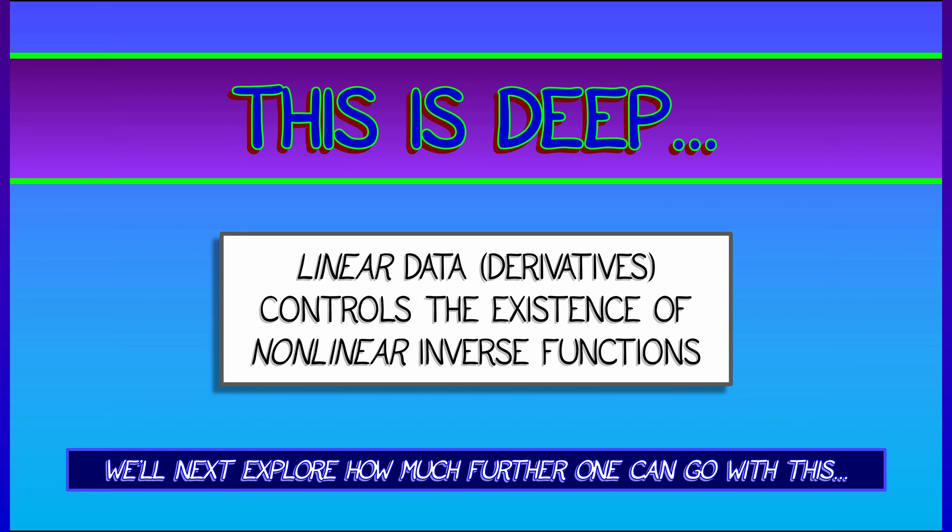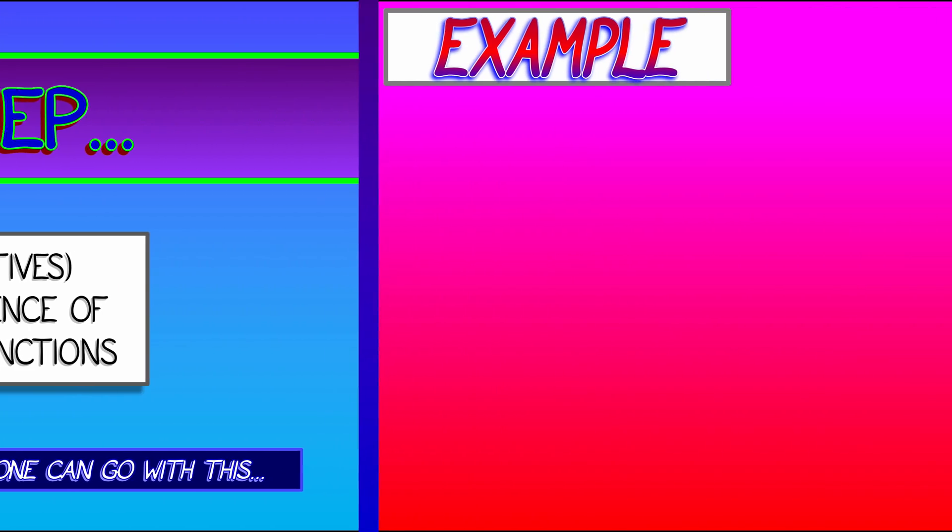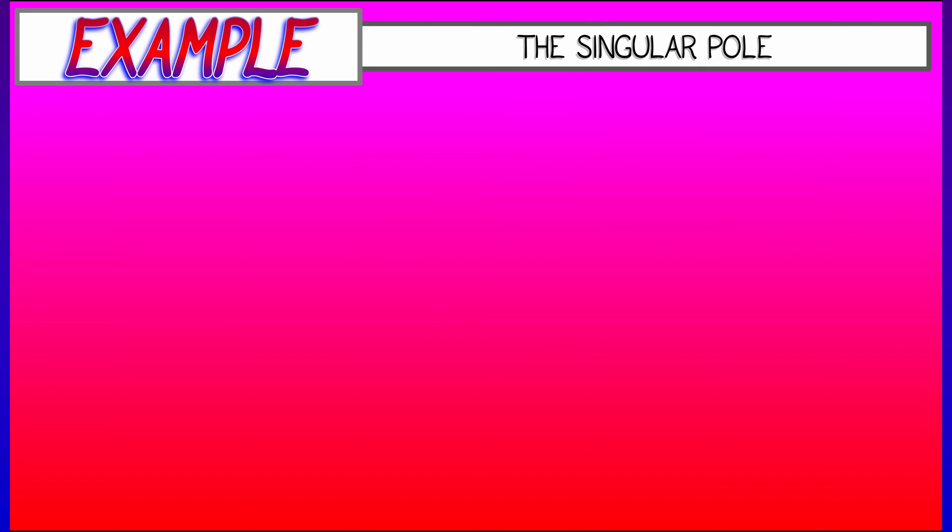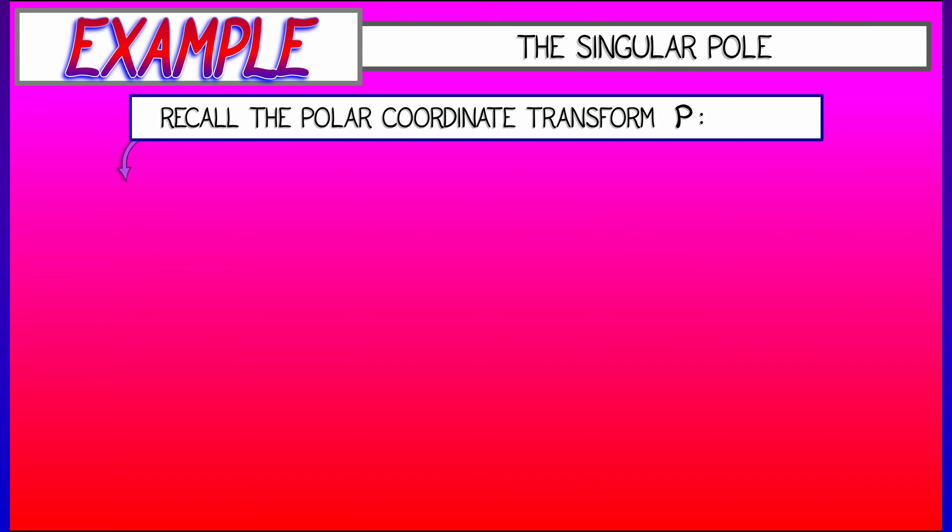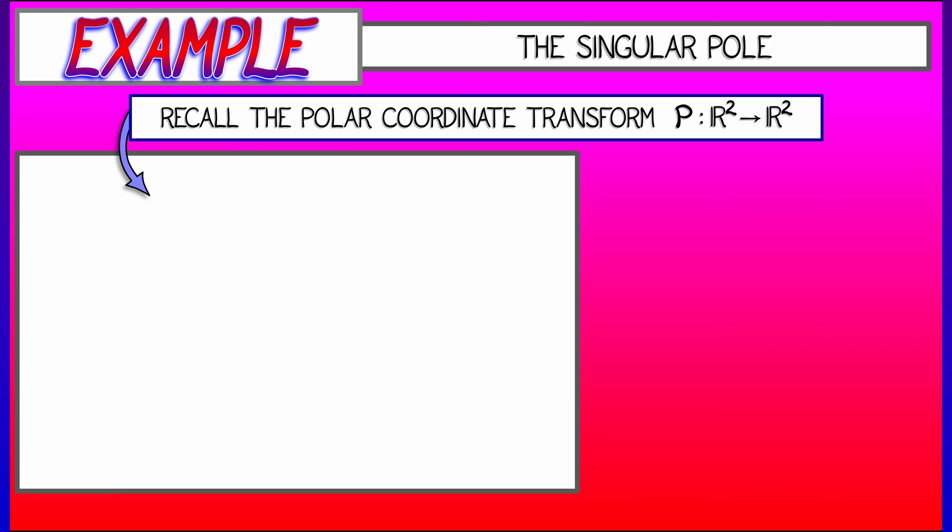Now we're going to see how much farther we can go with this, but for now, let's look at a simple, concrete example. We'll recall the function from r2 to r2 that sets up polar coordinates, that has as outputs x